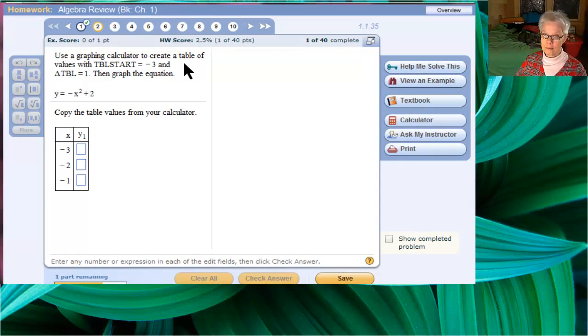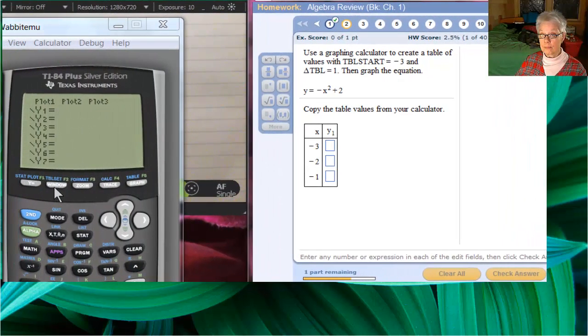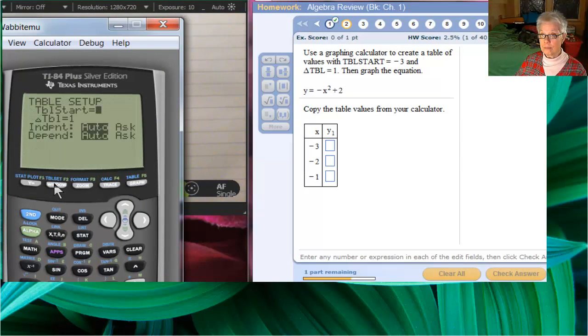Moving along. This time we're going to use a graphing calculator and we're being told how to set it up. To go to table start, set that at negative three and set the change in the x-coordinates to be one. And we're going to be graphing y equals negative x squared plus two. I'll use my calculator. I'm going to go to second window. Table start is there at the top. I'll set it to negative three. And the change in the x-coordinates called delta table is already set to one. That's the default.